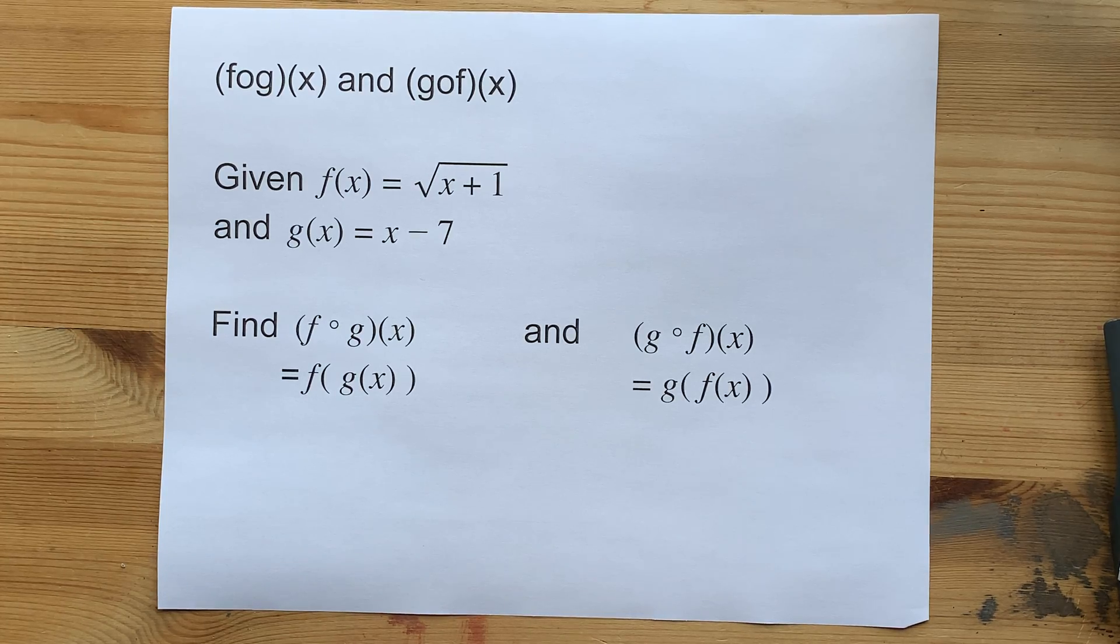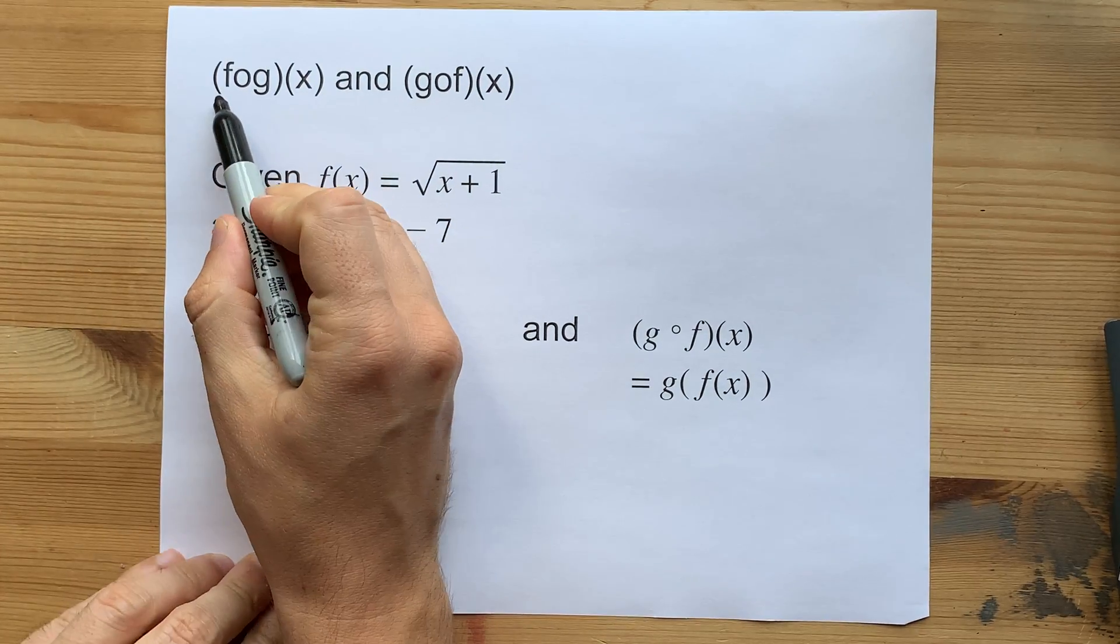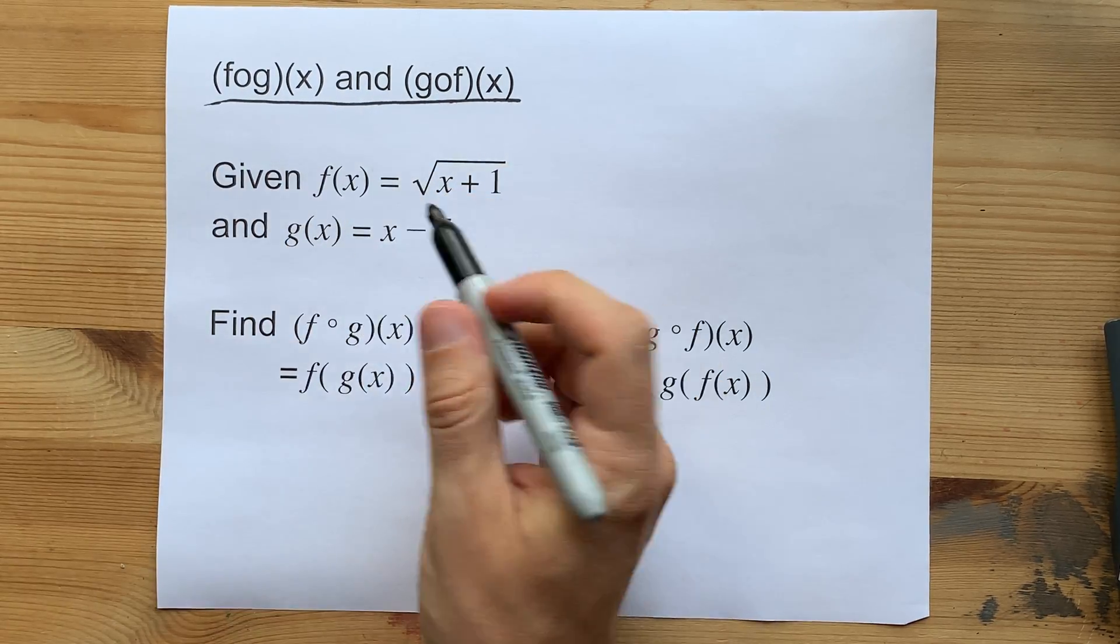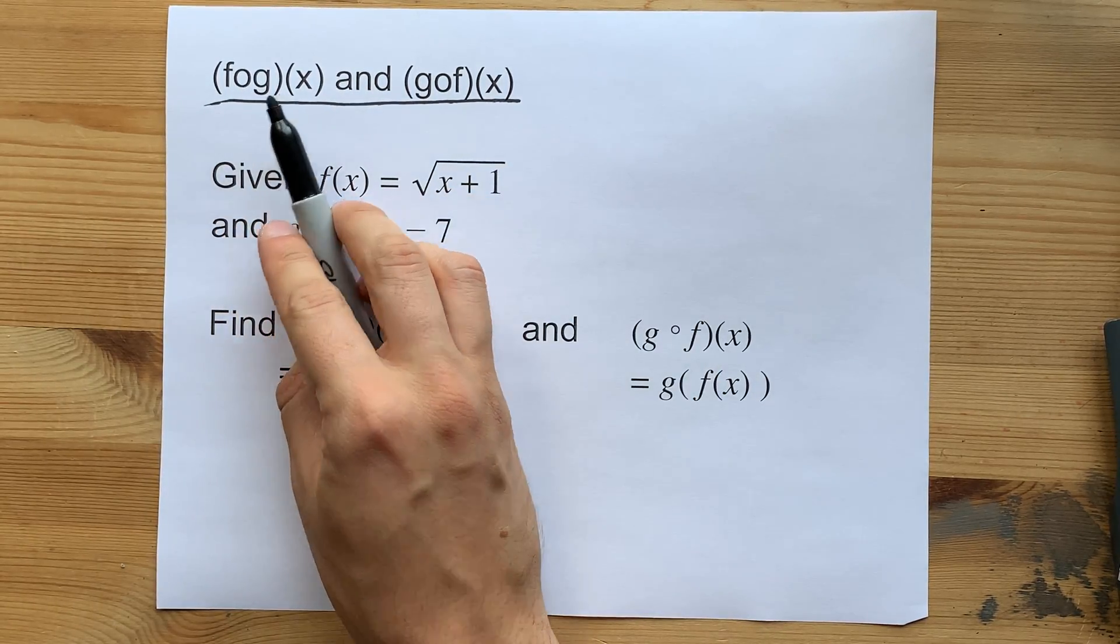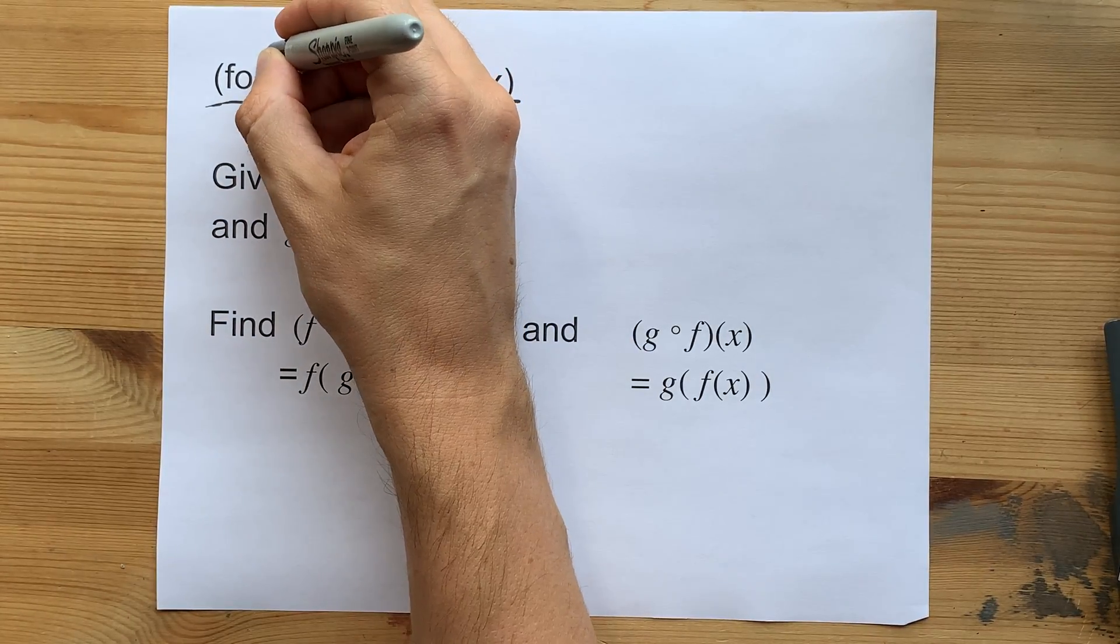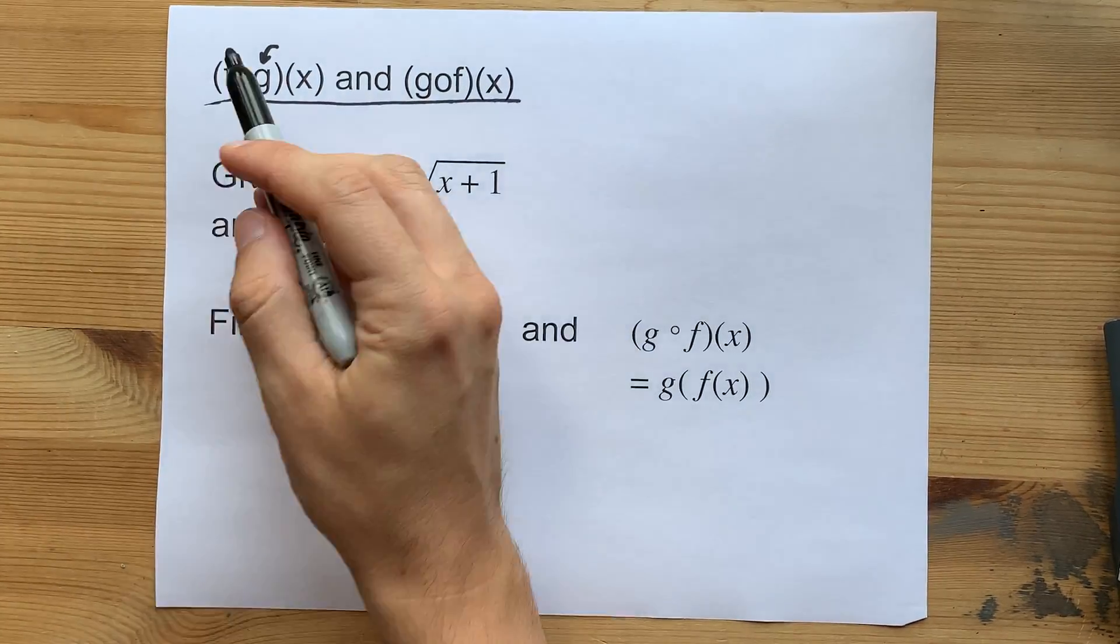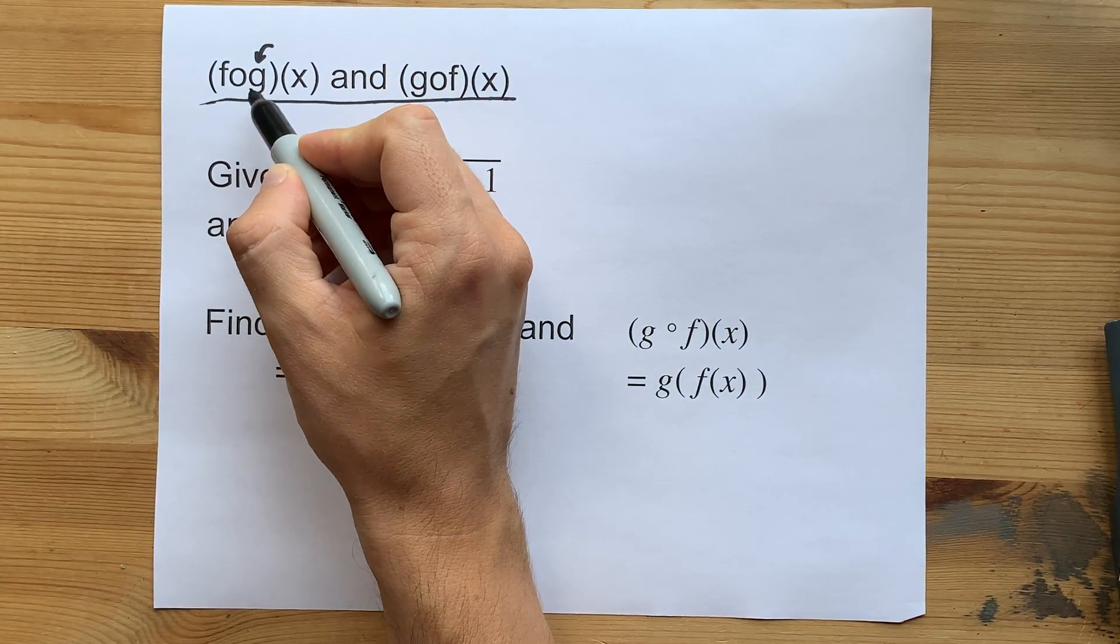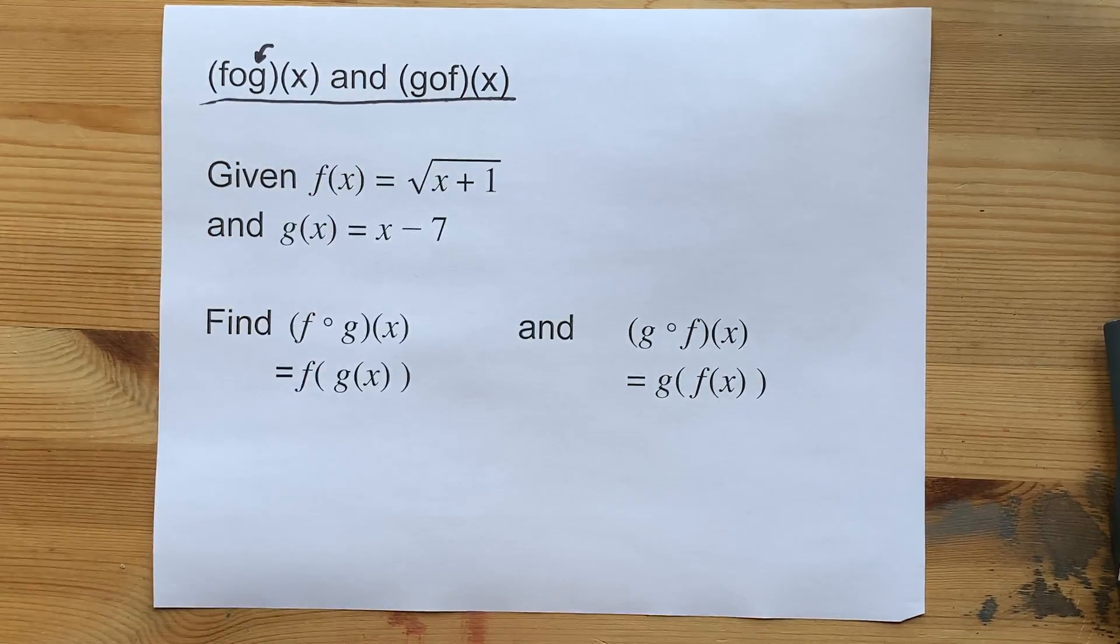Quick examples for composition of functions, which are often written fog(x) and gof(x), or like letter of letter x. What that really means is that you're going to take this function as written, g in this case, and plug the whole thing in wherever you see x in f.